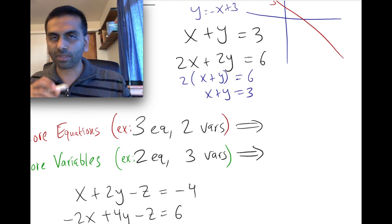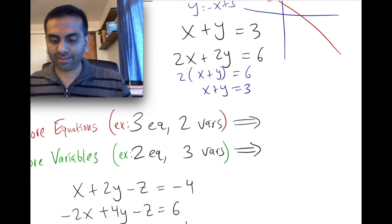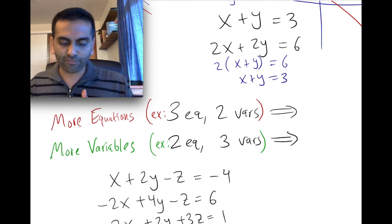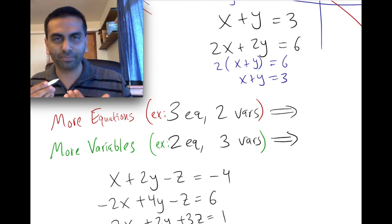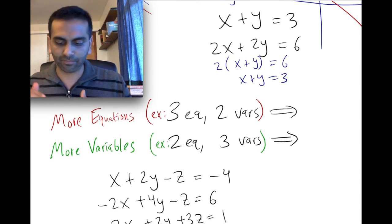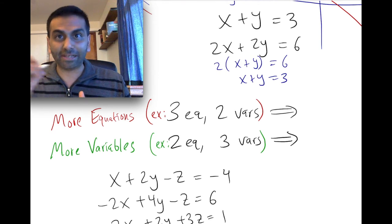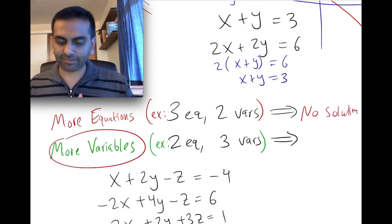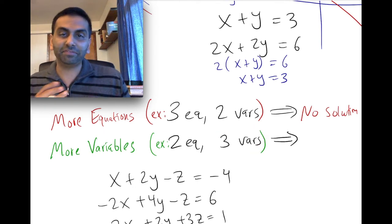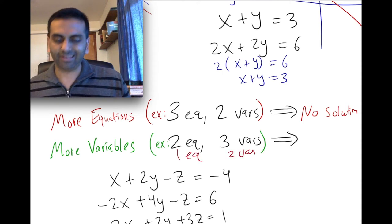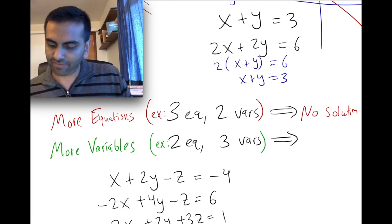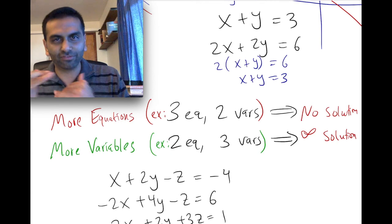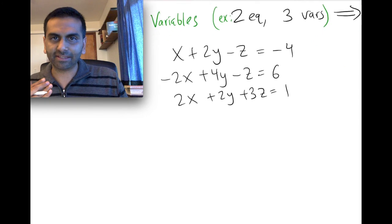Even with 18 equations and 18 variables, there are either zero, one, or infinitely many solutions depending on whether the equations contradict each other or duplicate each other. In general, after eliminating duplicates and contradictions: if there are more equations than variables you'll reach a contradiction and there's no solution; if there are more variables than equations there are infinitely many solutions; if the number of equations equals the number of variables there's exactly one solution.